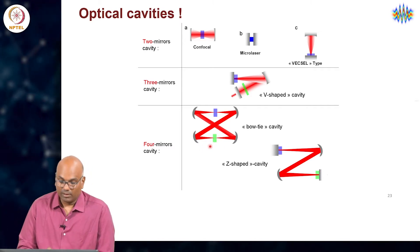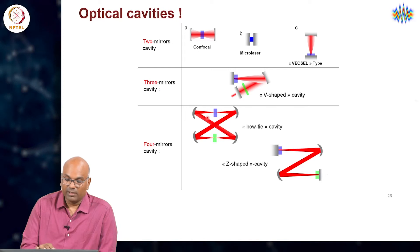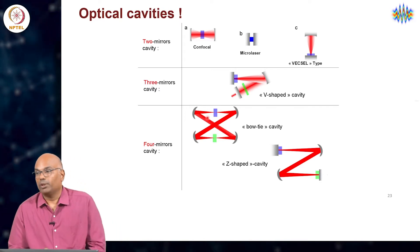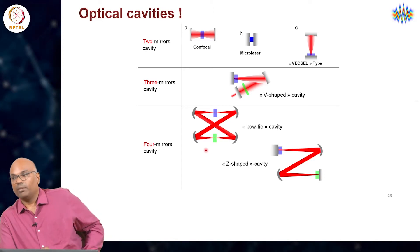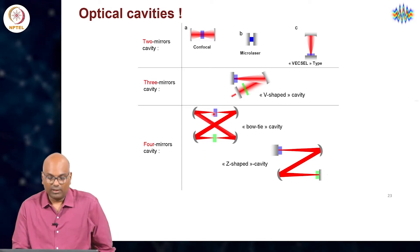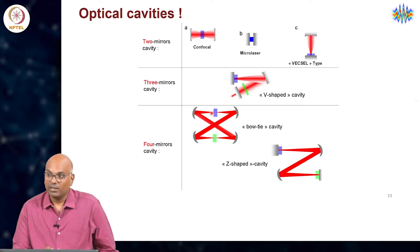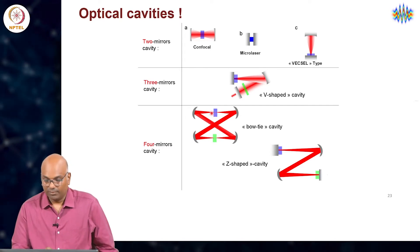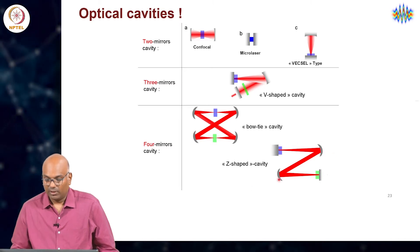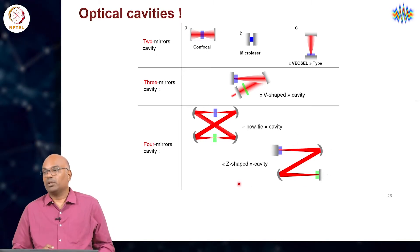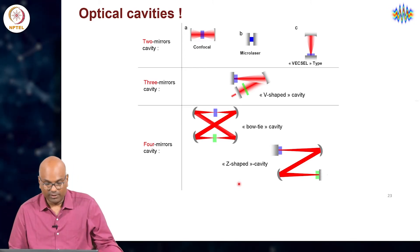In some contexts you can even do spectroscopy inside the laser, where you can imagine that one of these pieces is the gain medium and the other a spectroscopic test sample that is placed inside the resonator. Or for that matter, Z-shaped cavities as is popular in the case of titanium sapphire and femtosecond lasers.